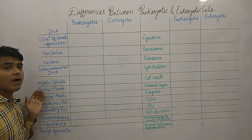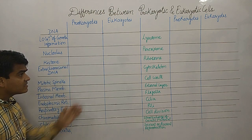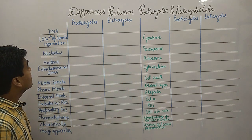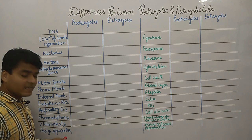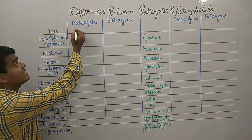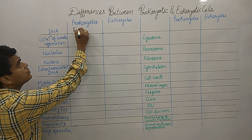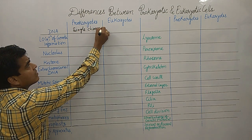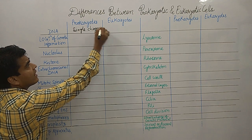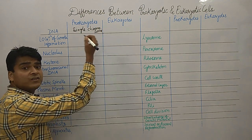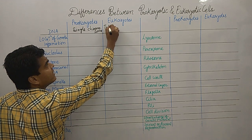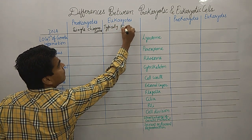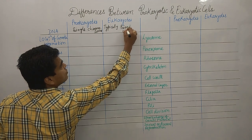Starting with DNA: in prokaryotes, DNA is present in a single chromosome, while in eukaryotes it is typically present in paired chromosomes.